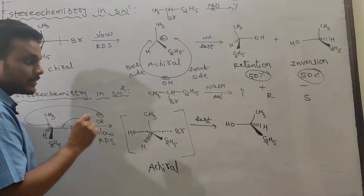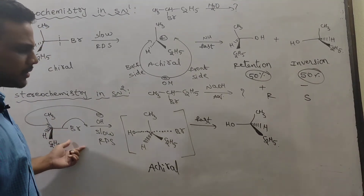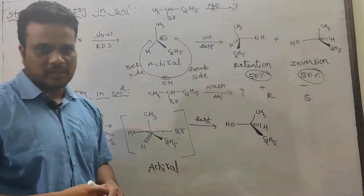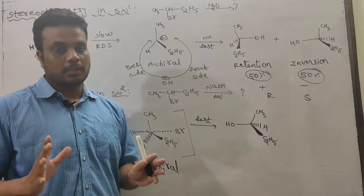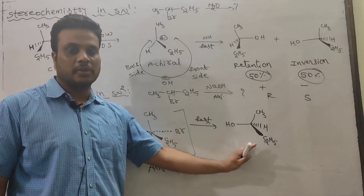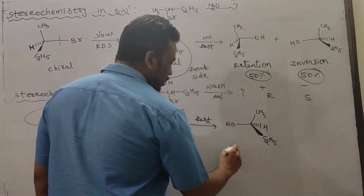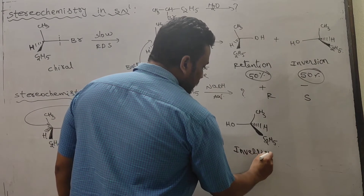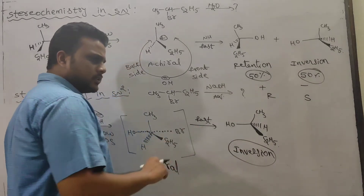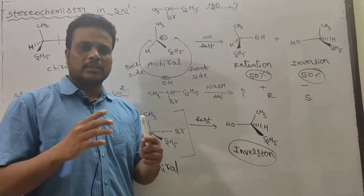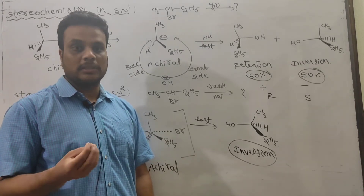When you take any isomer — plus or minus — in SN2, only a single product is formed; there is no chance of another product. So SN2 is stereoselective, because 100% of one product is formed with inverted configuration. Inversion takes place in SN2. Even if two products were formed at 95% and 5%, that would still be stereoselective as long as one is the major product, but here only a single product forms.